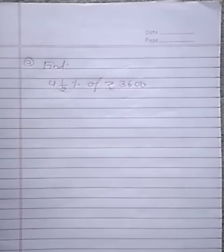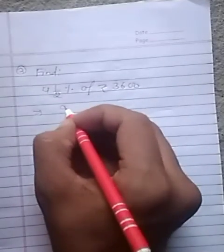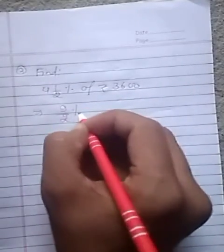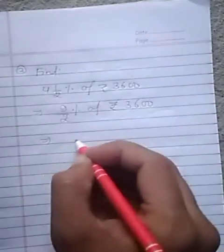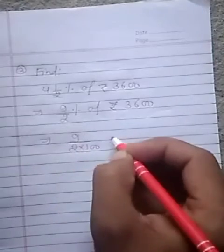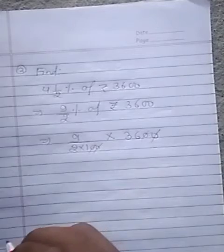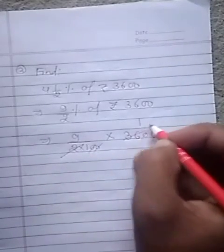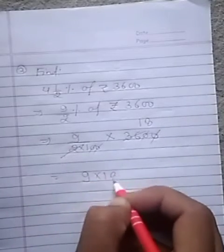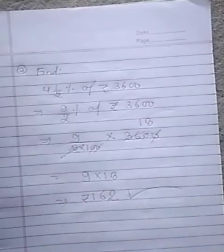Find 4 and 1 by 2 percent of 3600. You will write 4 into 2 is 8, 8 plus 1 is 9. 9 by 2 percent of rupees 3600. 9 upon 2 into 100 multiply by 3600. 0 to 0 cancel. 2 divided by 36, we get 18. 9 into 18, we get 162 rupees.